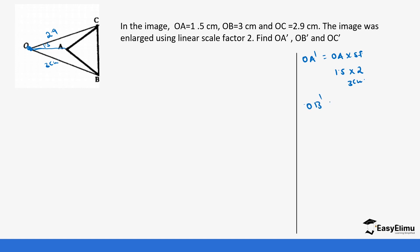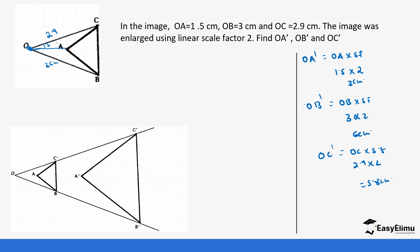OB' will be OB times the scale factor: 3 cm times 2, which gives us 6 cm. And OC' is OC times the scale factor: 2.9 times 2, which gives us 5.8 cm. If we were to draw the image, it will look like this. We extend the line OC and then measure from O to C' using this new measurement.